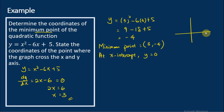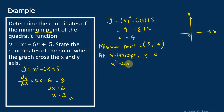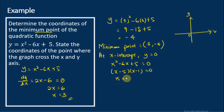This is the y-axis and this is the x-axis. At the y-axis, x = 0, and at the x-axis, y = 0. So at the x-intercept, y = 0. When y = 0, we write x² - 6x + 5 = 0. To solve this, we factorize the quadratic expression: (x - 5)(x - 1) = 0. Therefore, x = 1 or x = 5. These two are the x-intercepts.